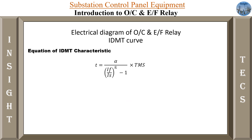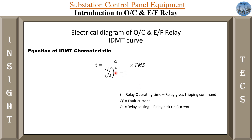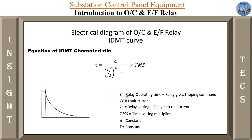The basic equation for IDMT characteristics is defined as T equals alpha into TMS divided by the ratio of IF by IS. T is the relay operating time — the time in which the relay is going to give the tripping command. IF is the fault current, IS is the relay setting or relay pickup current, TMS is the time setting multiplier, and alpha and beta are constants. From this equation, we will be deriving this graph.